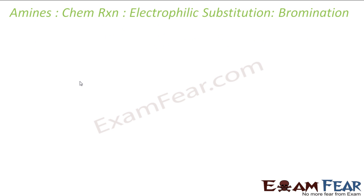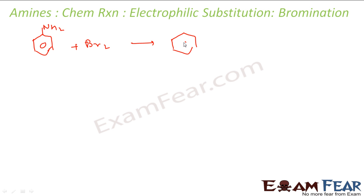We have different kinds of electrophilic substitution reactions. The first is bromination. When you add bromine to aniline, bromine replaces the hydrogen at ortho and para positions. You get bromine here, here, and here — this is aniline and this is 2,4,6-tribromoaniline.